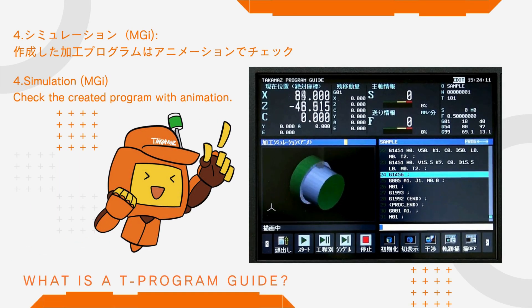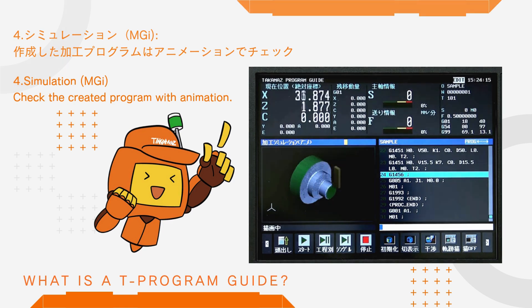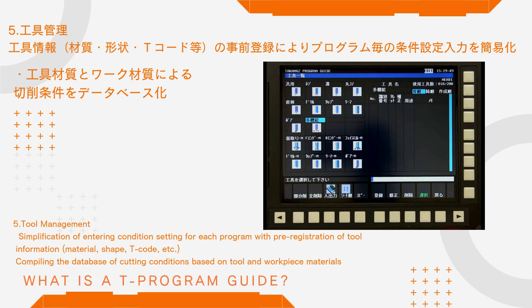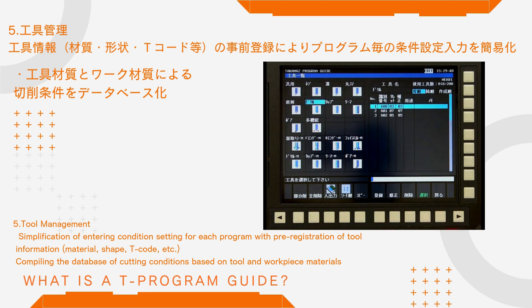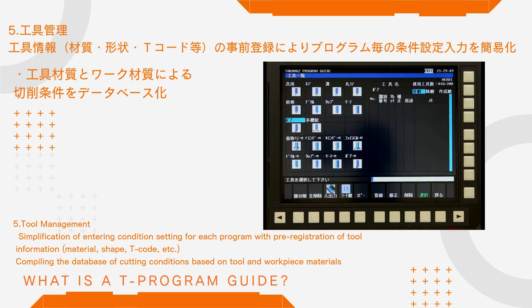Check the created program with animation. Simplification of entering condition settings for each program is achieved through pre-registration of tool information, material shape, T-code, and more, compiling a database of cutting conditions based on tool and workpiece materials.